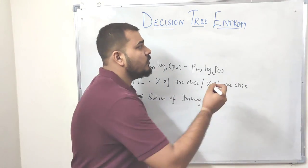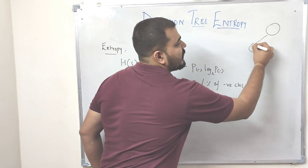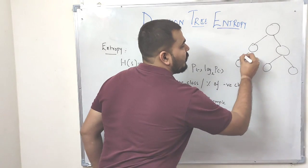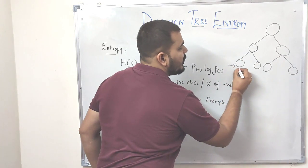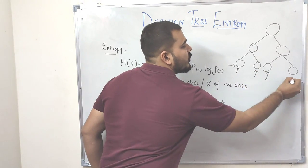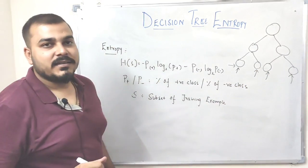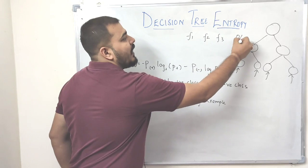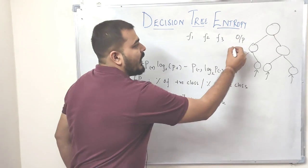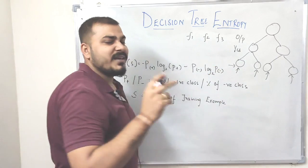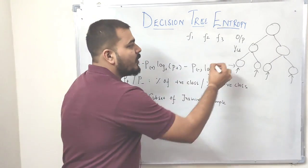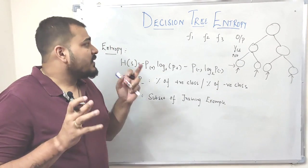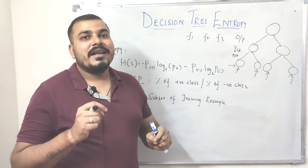Let me consider an example. As you know, a decision tree basically means that we construct trees based on attributes, and finally you will see that after constructing this tree, the leaf nodes are your final class labels. Suppose I have features F1, F2, F3, and based on these features I have a dependent output feature. The type of output is a binary classification, so the output will be either yes or no. While constructing the decision tree, there is an algorithm called the ID3 algorithm.